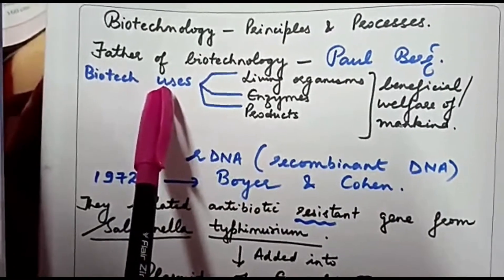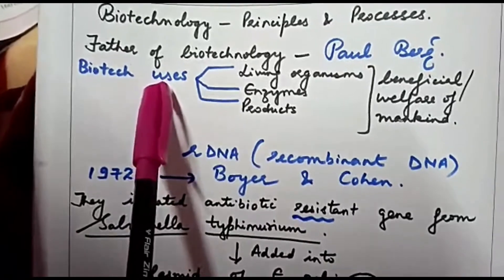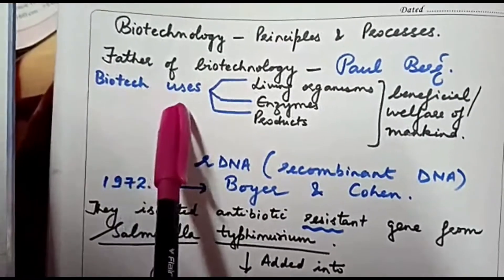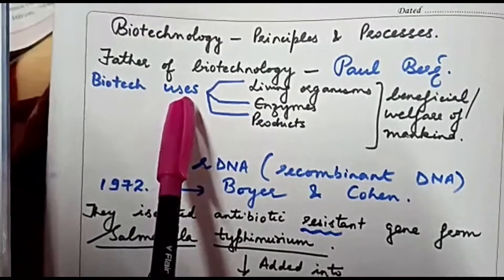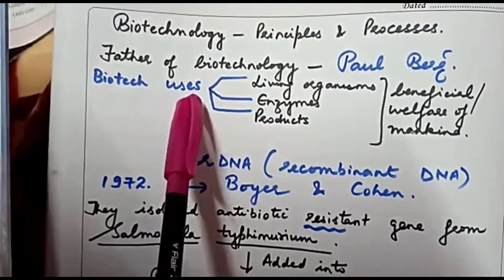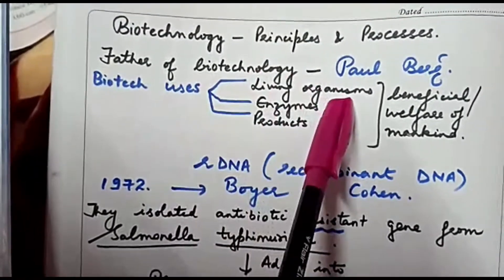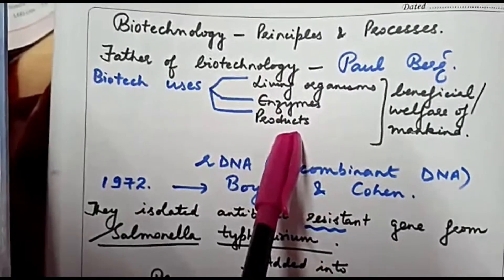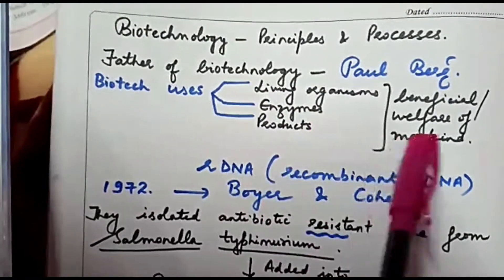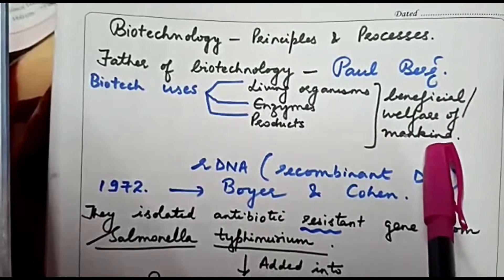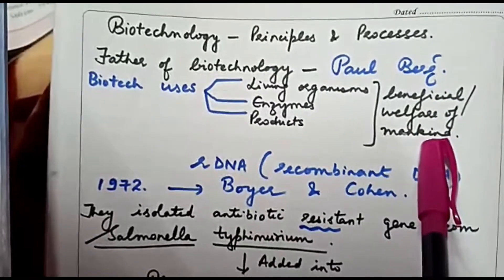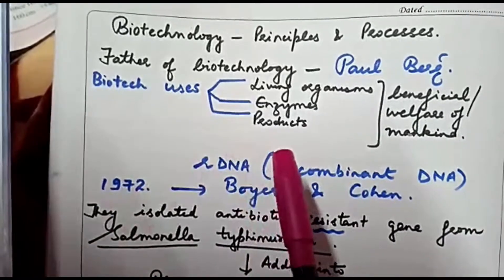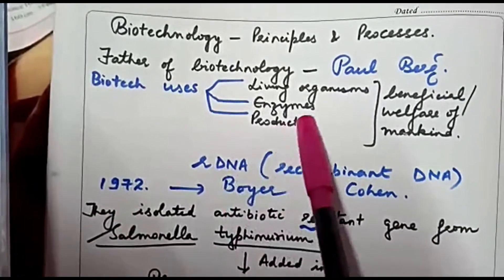Before discussing other aspects of the chapter, we need to know what biotechnology exactly is and what it uses. Biotechnology uses living organisms, enzymes, and their products which are beneficial to the welfare of mankind. Let's look at a very simple and well-known example to understand how we use living organisms.